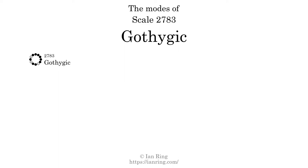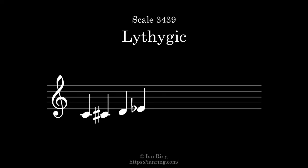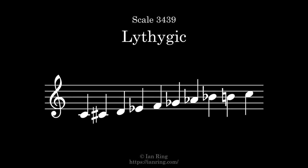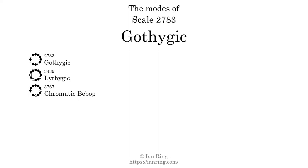The first mode is itself. The second mode is scale 3439, also known as Lethargic. It sounds like this. The third mode is scale 3767, also known as Chromatic Bebop. It sounds like this.